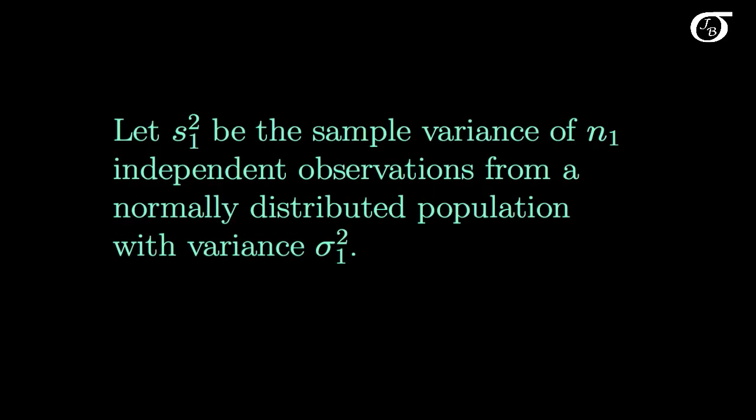Let S1 squared be the sample variance of N1 independent observations from a normally distributed population with variance sigma 1 squared. Similarly, S2 squared is going to be the sample variance of N2 independent observations from a normally distributed population with variance sigma 2 squared. We are also going to assume that the samples are independent, and we're going to need that for this F test to be reasonable.